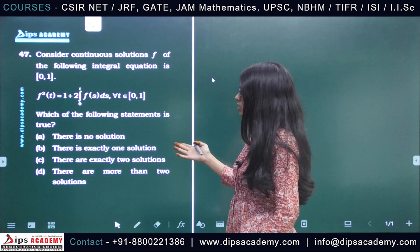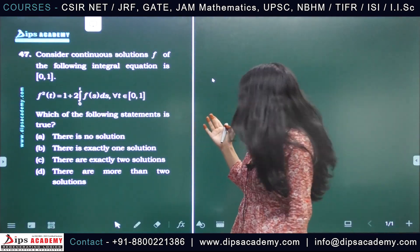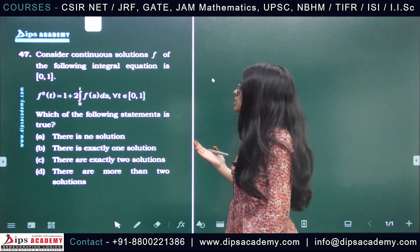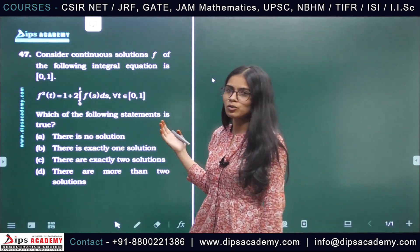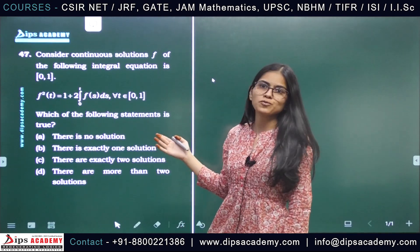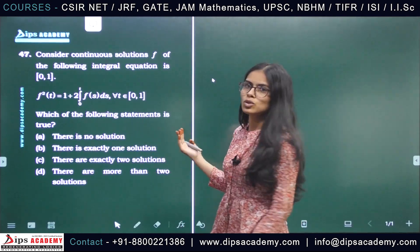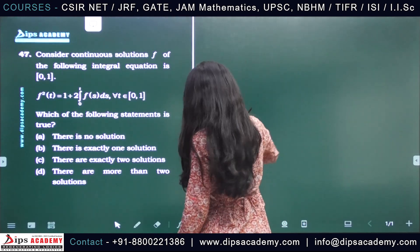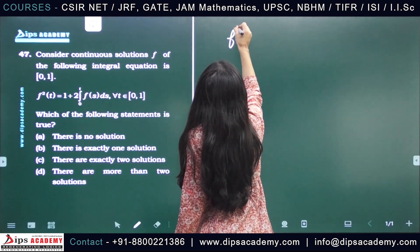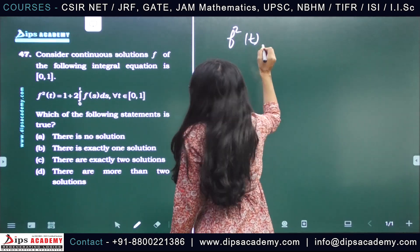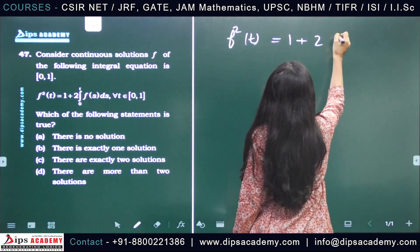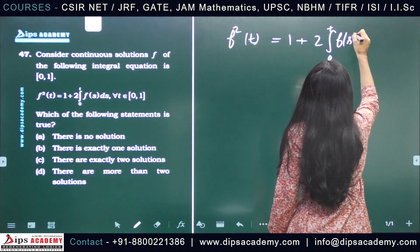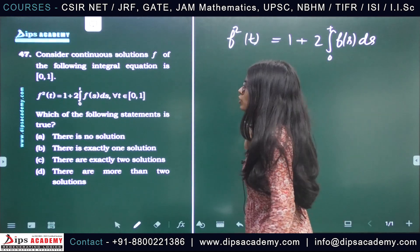We have to choose the true statements from the given options about the solution of this integral equation: (a) there is no solution, (b) there is exactly one solution, (c) there are exactly two solutions, (d) there are more than two solutions. We will solve this integral equation, find the solutions, and then choose the correct statement.